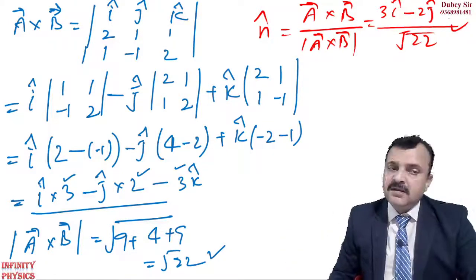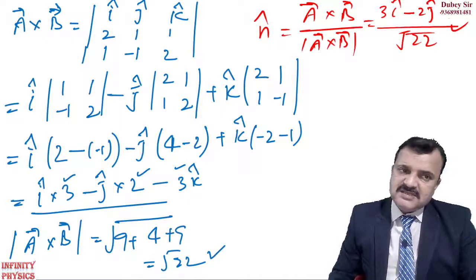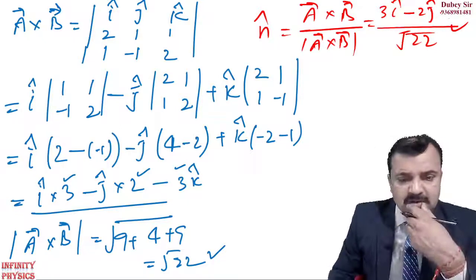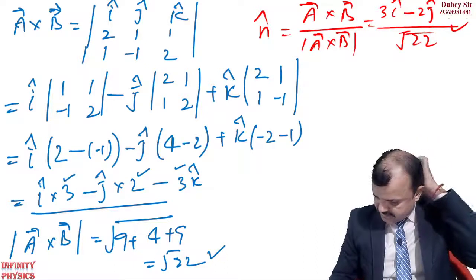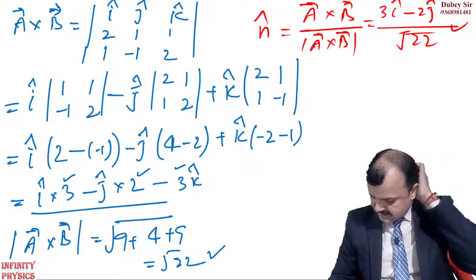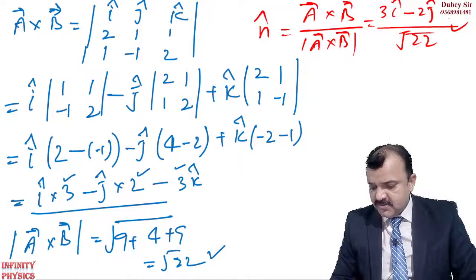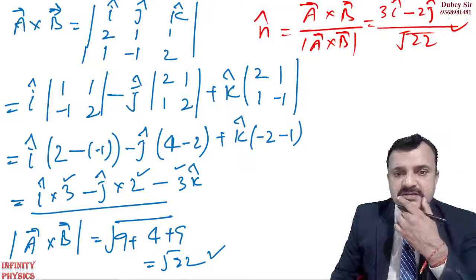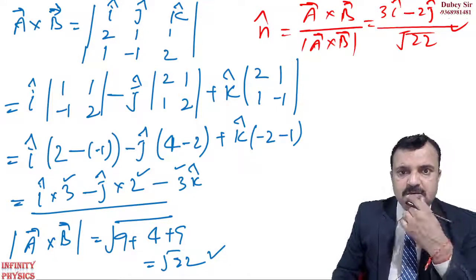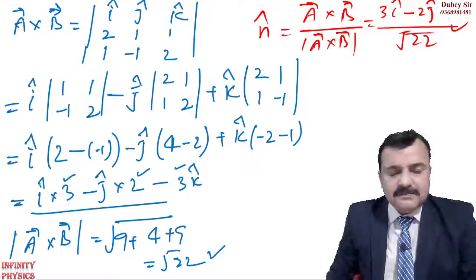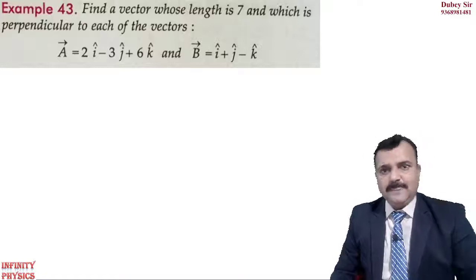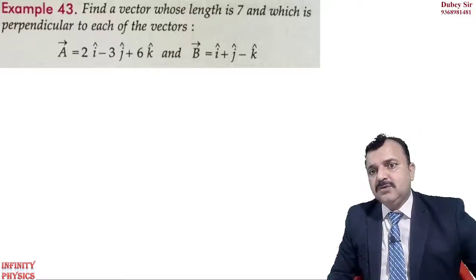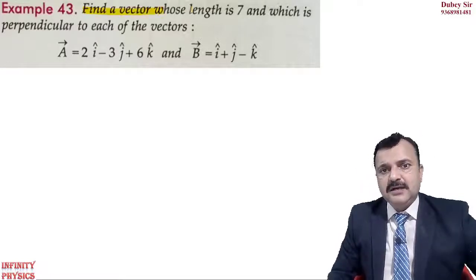Let me verify: 9 + 4 + 9 = 22, so the modulus is √22. This is the way to calculate a unit vector perpendicular to both given vectors. Now come to the next question: find a vector whose length is 7 and which is perpendicular to each of vector A and vector B.